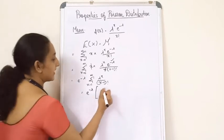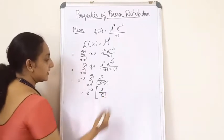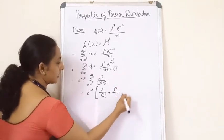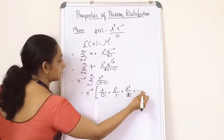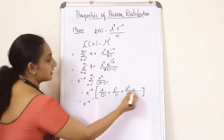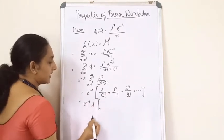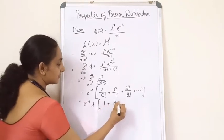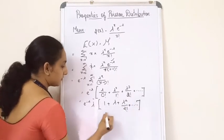Expanding the series starting from x=1: λ/0! + λ²/1! + λ³/2! + etc. Here λ is a common factor, so taking λ outside gives λ · (1 + λ + λ²/2! + …).